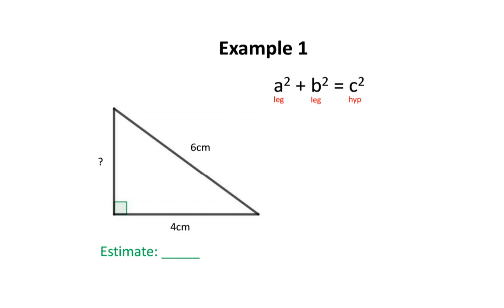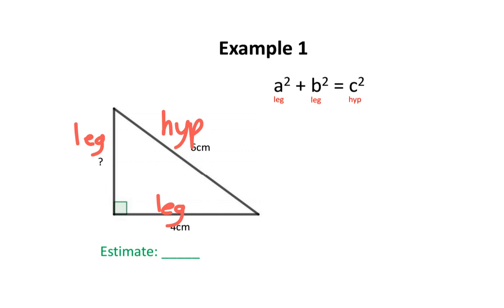In our first example, we have a right triangle. The hypotenuse is 6 cm, one of the legs is 4 cm, and the other leg is unknown. Before doing any calculations, let's make an estimate of this unknown leg. We know that the hypotenuse is always the largest side, so this leg must be smaller than 6 cm. I'm going to estimate it to be about 4 cm, since it looks very similar in length to the other leg.